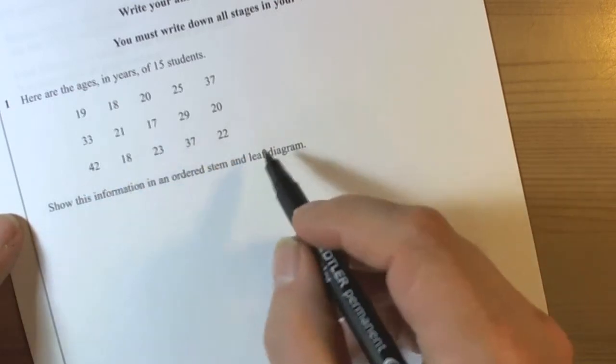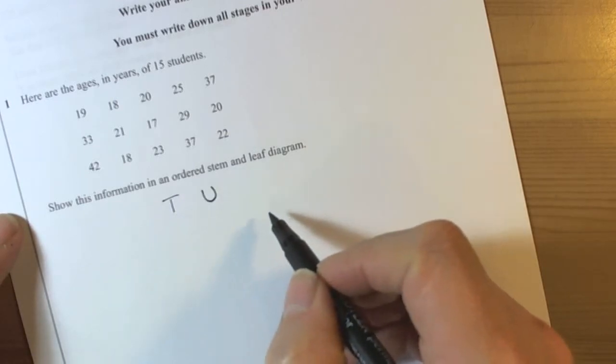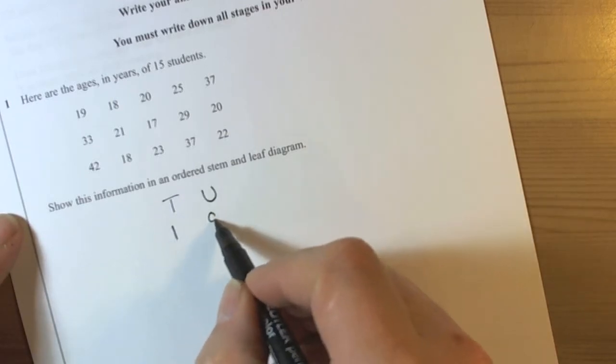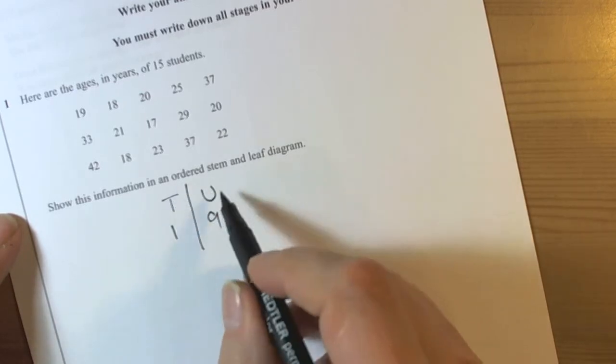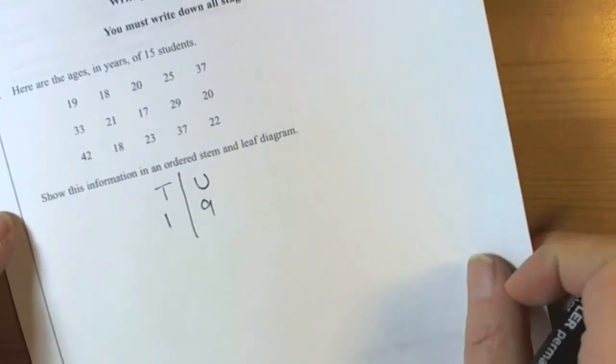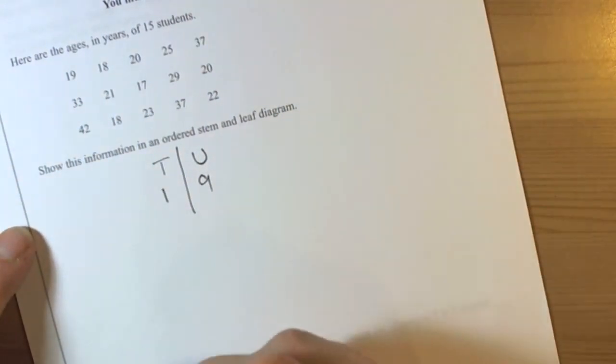So here we can see we've got numbers in the tens and the units. For example, 19 - we want to split that so it's going to be tens down and the units on the other side. So look at the numbers and we fill in the table.